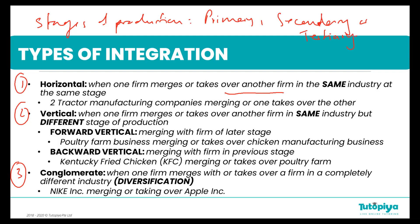With vertical integration, one firm merges with or takes over another firm in the same industry, but the difference is that they're in a different stage of production. Tertiary is the highest level, secondary is the medium level, and primary is the lower level. They may be producing in the same industry, but at different stages of production.